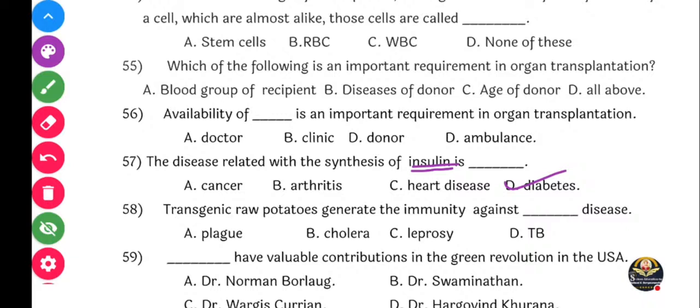Next question: Transgenic raw potatoes generate immunity against dash disease. Tumhi transgenic raw potatoes sa bagarre abhyas kela asil - te kunti disease cha against vaccine tar karanaar ahe. Yes, it's cholera, option B.